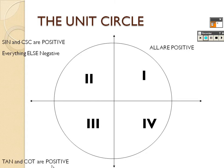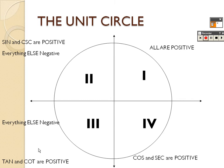In quadrant 3, only tangent and cotangent are positive; sine, cosine, secant, and cosecant are all negative. So if I said find sine of 200 degrees, sine would be negative, but tangent of 200 would be positive. In quadrant 4, cosine and secant are positive, but tangent, cotangent, sine, and cosecant are all negative. So cosine of 300 degrees is positive, but sine of 300 degrees is negative.